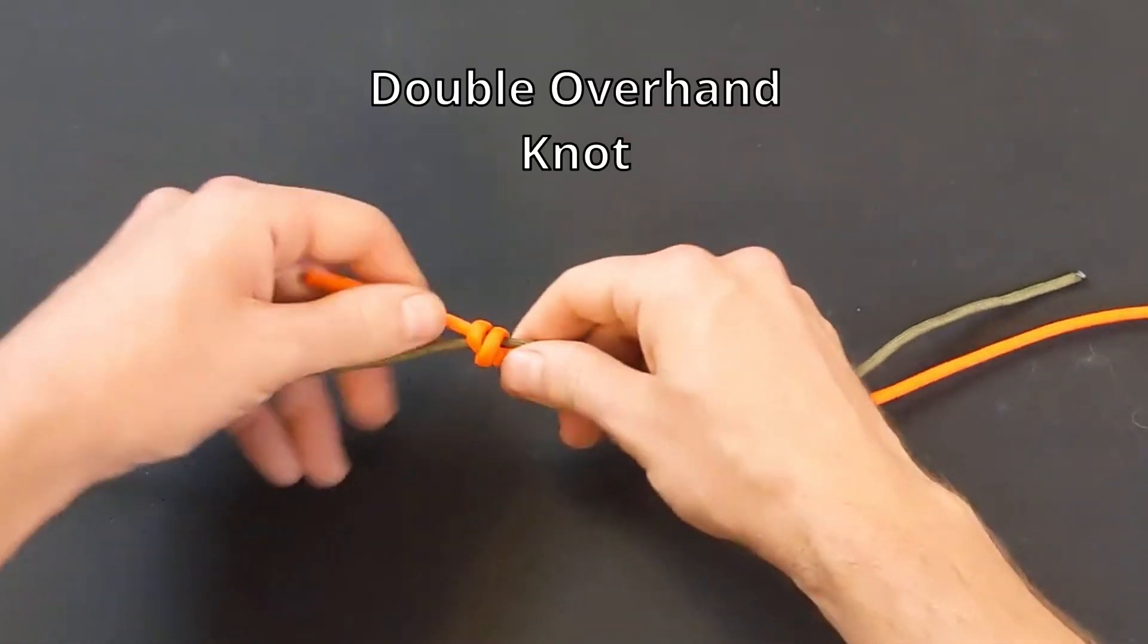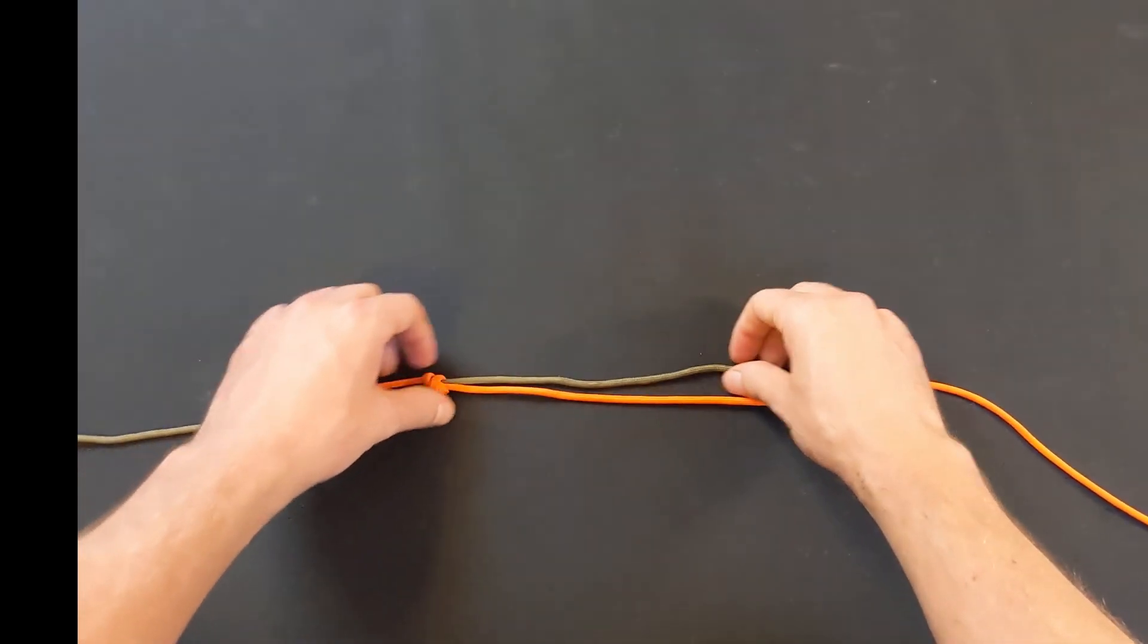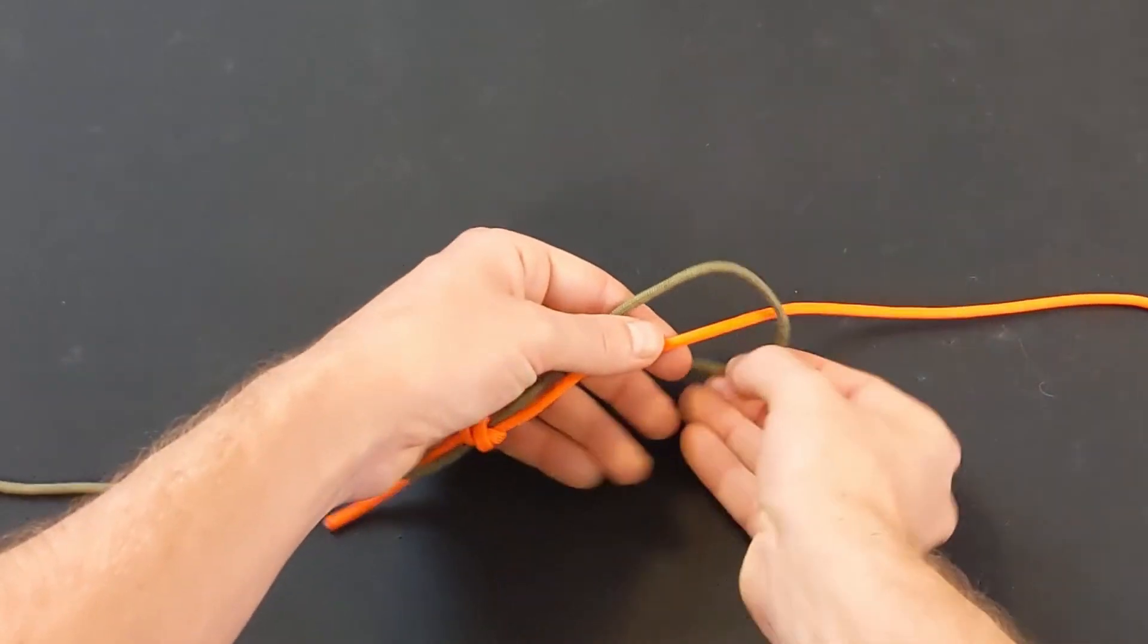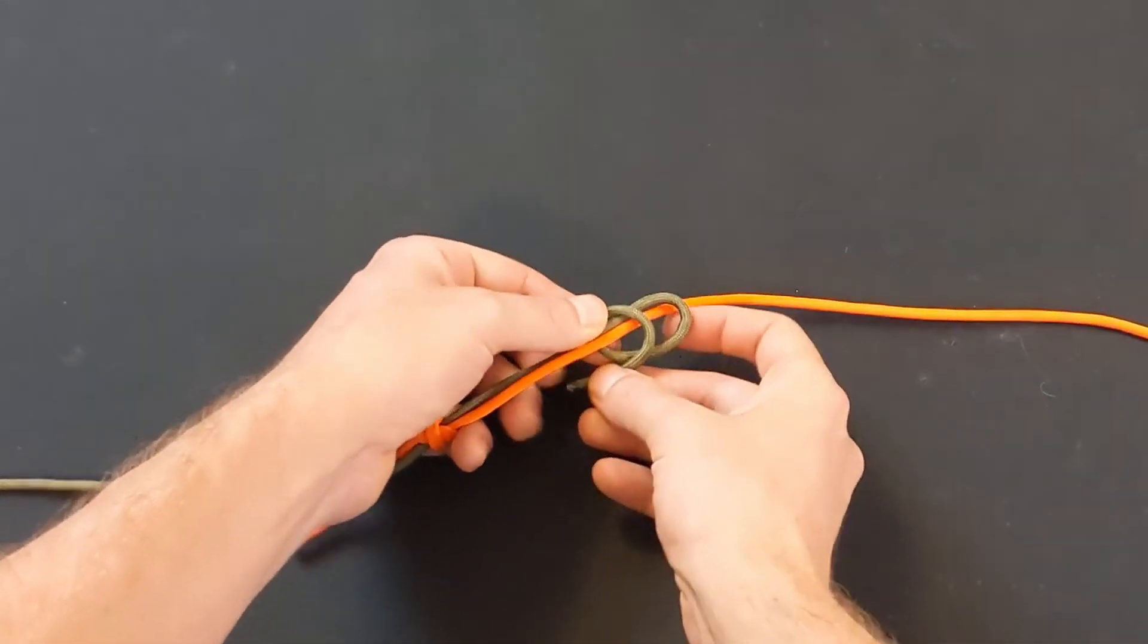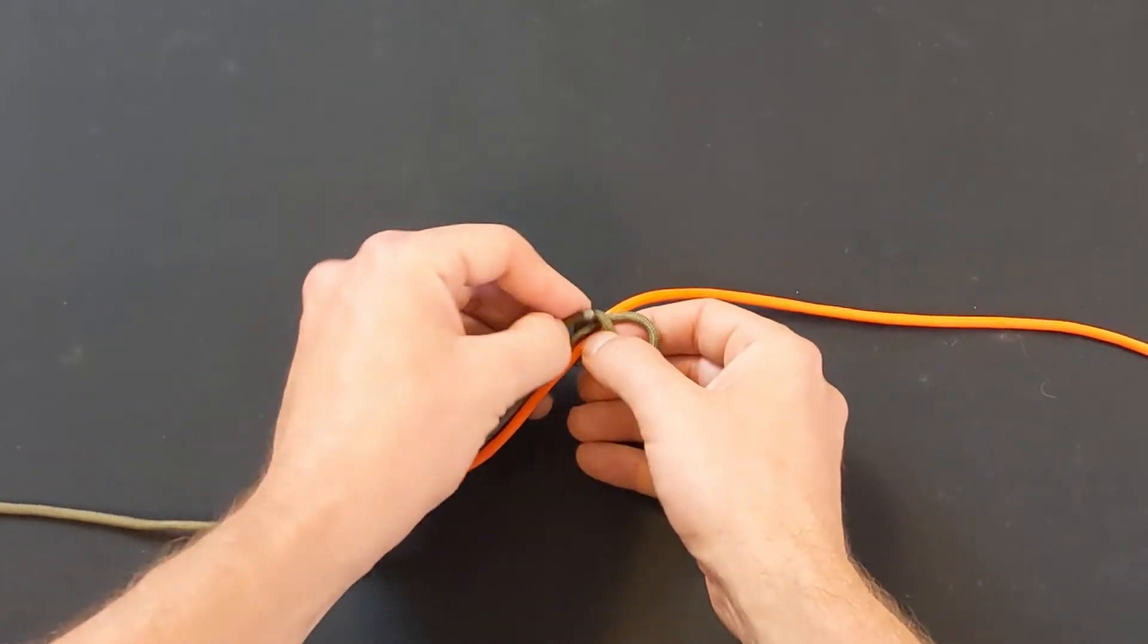This is called a double overhand knot. Now repeat this with the other end of line. Go over the other line and back underneath both lines. Make another loop over and under both lines. Feed the working end through both loops and tighten.